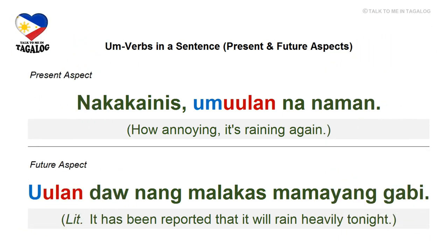Now let's use these nine words in sentences. Each pair has a present and a future aspect sentence. Nakakainis — umuulan na naman ('How annoying, it's raining again'). Future aspect: Uulan daw ng malakas mamayang gabi — 'It has been reported that it will rain heavily tonight.' The word daw is used in reported speech, meaning you're repeating what somebody else said. Malakas means strong, or heavy when referring to rain. Mamayang gabi means tonight.